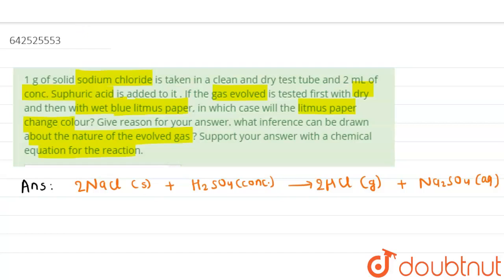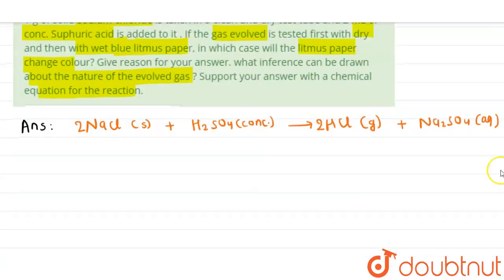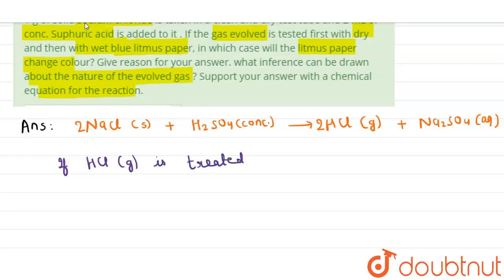So what happens now? This HCl gas is spread. Okay. Now if HCl gas is tested - sorry, tested I mean - is tested on dry blue litmus paper.